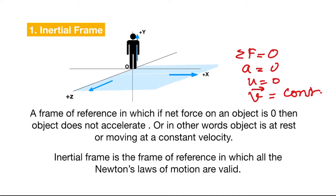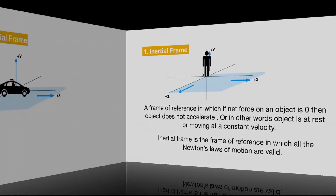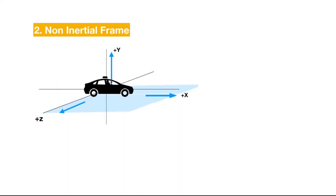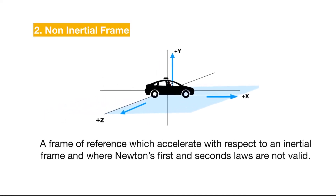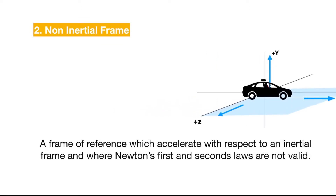An inertial frame is the frame of reference in which Newton's laws of motion are valid, and any motion observed through the inertial frame is explainable by Newton's laws of motion. The second type is the non-inertial frame, which is a frame of reference that accelerates with respect to the inertial frame. In this frame, Newton's first and second laws are not valid — even if sigma F is zero, you can observe an acceleration in the object, meaning acceleration may not be zero.